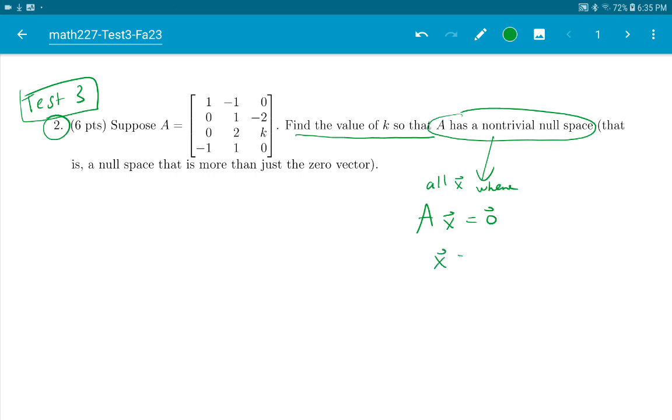Of course, x equals 0 is always in the null space, because A times 0 will be 0. That's called a trivial null space, but does it have more?